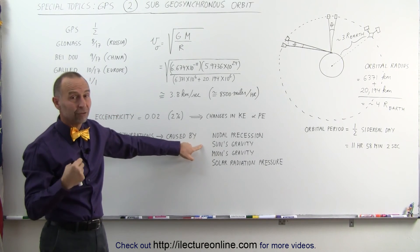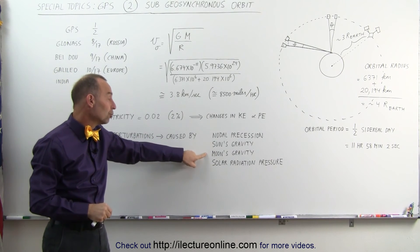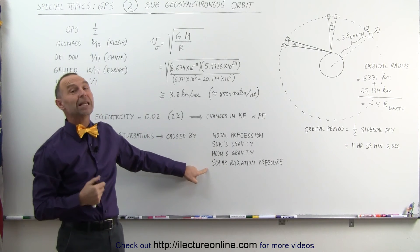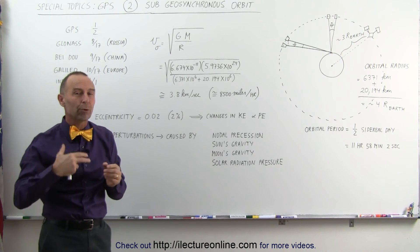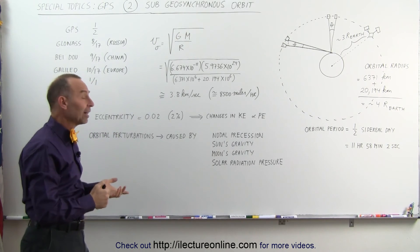Also we have the satellites have to contend with the sun's gravity, with the moon's gravity, and with the solar radiation pressure, all contributing to perturbations in the orbit of the satellites.